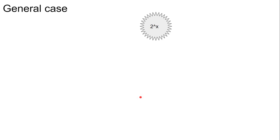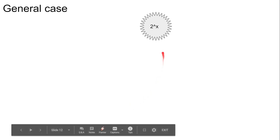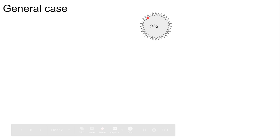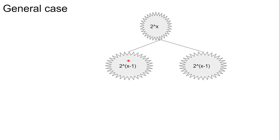Let's talk about the general case. When we have a network of size 2^x, we can split this network in two, so we'll have two networks of size 2^(x-1).